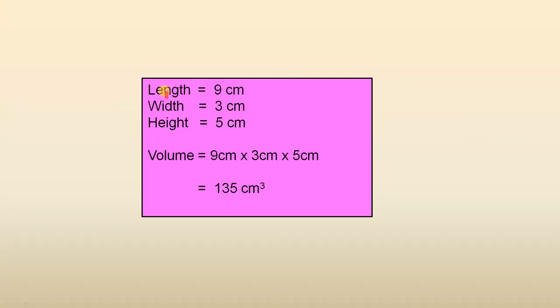So we have the length is 9, the width is 3, and the height is 5. And those measurements are in centimetres. So to find a volume, you just multiply those together. So 9 times 3 times 5 is 135 cubic centimetres.